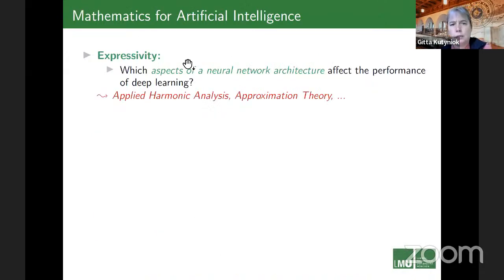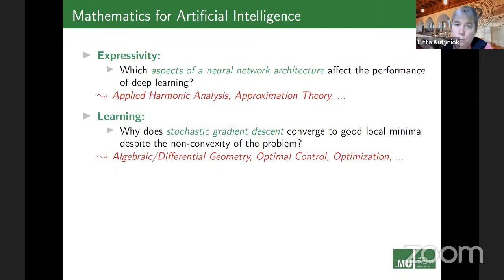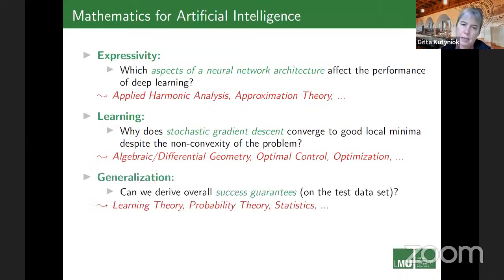The key theoretical directions are: expressivity — asking about the effect of network architecture on performance, which is purely an approximation-theoretic question; learning — why stochastic gradient descent performs well on a highly non-convex problem, and why the algorithm converges to a good local minimum, with areas like algebraic differential geometry helping understand the shape of minima; and generalization — the holy grail — whether we can get success guarantees on how the neural network performs on the test data set, requiring learning theory and statistics.